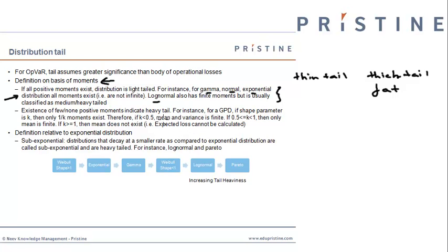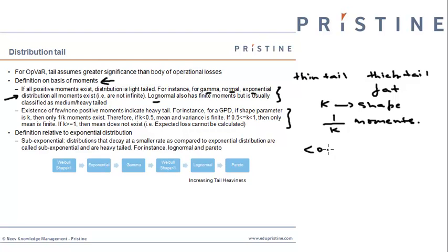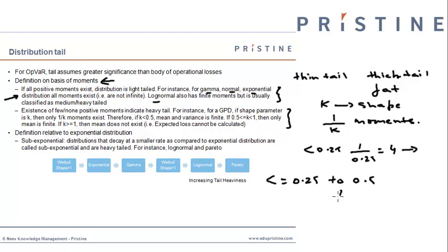However, if few moments of the distribution cannot be calculated because they are not finite, then the distribution will be a thick-tailed distribution. For instance, GPD: if K is the GPD shape parameter, then only 1/K moments can be calculated in case of GPD. Therefore if the shape parameter is less than 0.25, then 1 divided by 0.25 equals 4, so we can calculate all four moments which are mean, standard deviation, skewness, and kurtosis. But if the shape parameter is between 0.25 to 0.5, then 1 divided by 0.5 equals 2, meaning only mean and variance are finite.